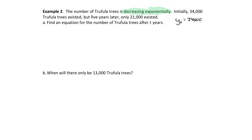In the model y equals y₀ e to the kt, y and t are variables, while y₀ and k are parameters — once known for a particular model, those remain the same. I know y₀ is 34,000, but I don't know k, so we need to figure that out.